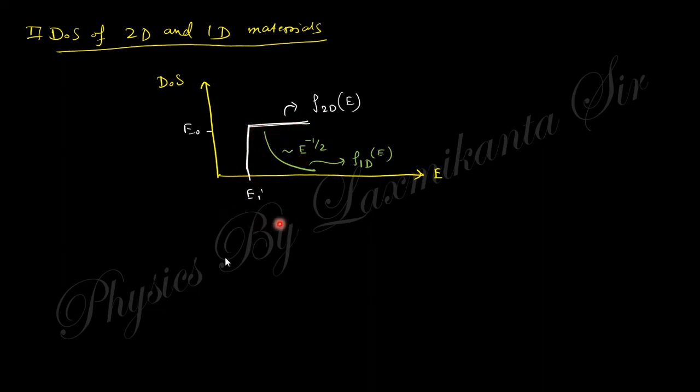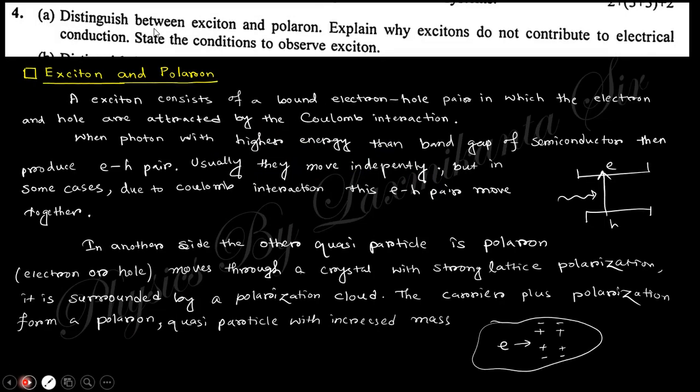Question number 4: distinguish between exciton and polaron. Actually, when electromagnetic wave energy is incident on a semiconductor, electrons jump from valence band to conduction band and produce electron-hole pairs. They are normally separated, moving independently. But sometimes due to Coulomb interaction, this electron-hole pair moves together.